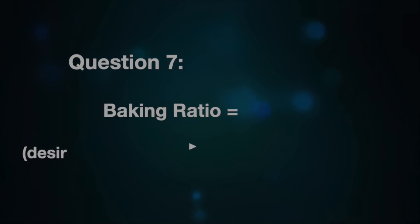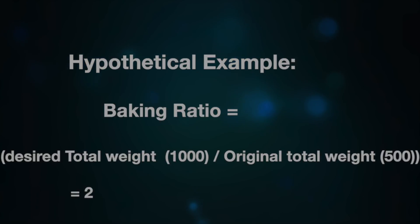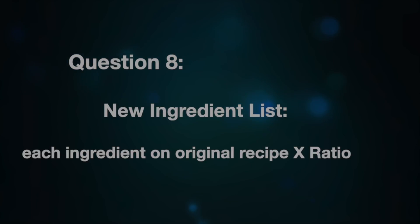Then you find the ratio. The formula is: divide the desired total weight by the original total weight. For example, if the original recipe had a total weight of 500g and I want to make 12 servings with a desired total weight of 1,000g, I divide 1,000 by 500, which gives me approximately 2. That is the ratio. Once you have that ratio, you multiply each of the original ingredient weights by that ratio.